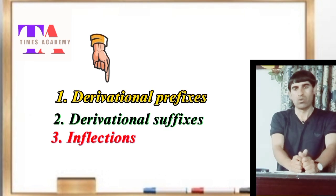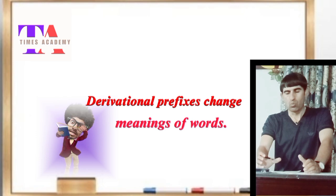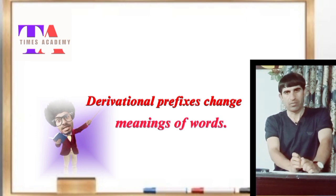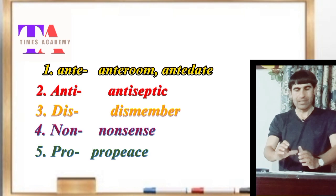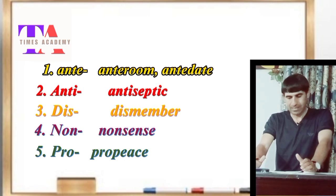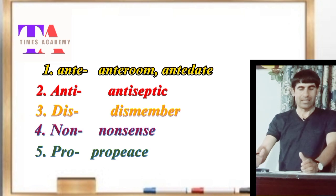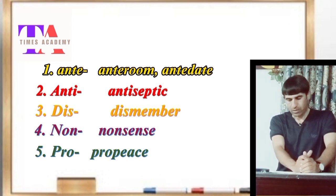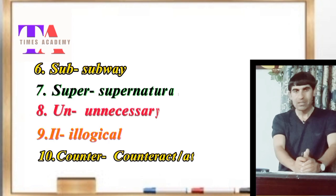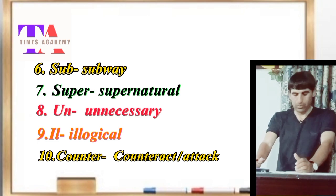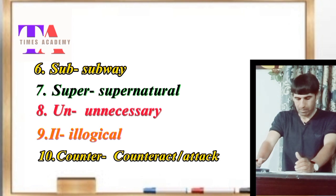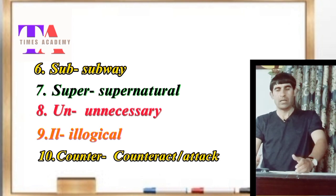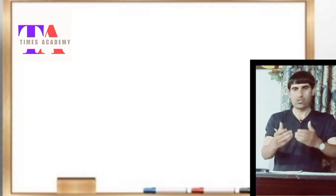Derivational prefixes are words that we use before other words to change their meanings. Examples include: number one, anti- (antidote); number two, antiseptic; number three, dis- (dismember); number four, non- (nonsense); number five, pro- (profits); number six, sub- (subway); number seven, super- (supernatural); number eight, un- (unnecessary); number nine, il- (illogical); and number ten, counter- (counteract). These specific words are put before words and they change the meanings of the words.